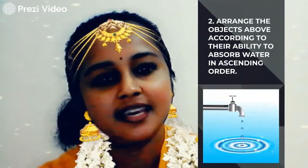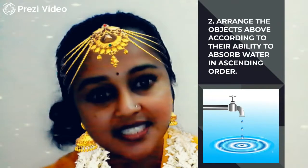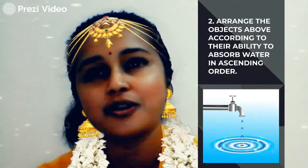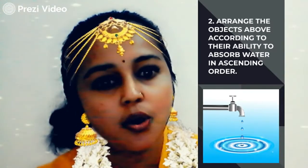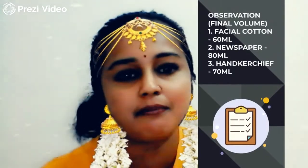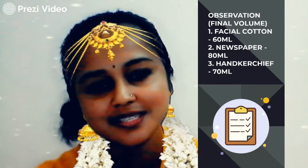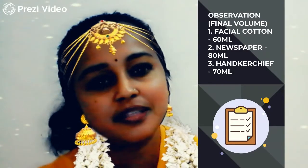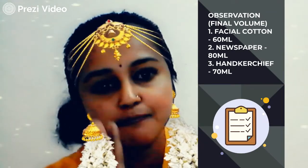The next question: arrange the objects according to their ability to absorb water in ascending order — from the smallest amount to the biggest amount absorbed. Going back to our observation, we look at how much water was absorbed, not the final volume. The newspaper absorbed only 20 ml, so it comes first.